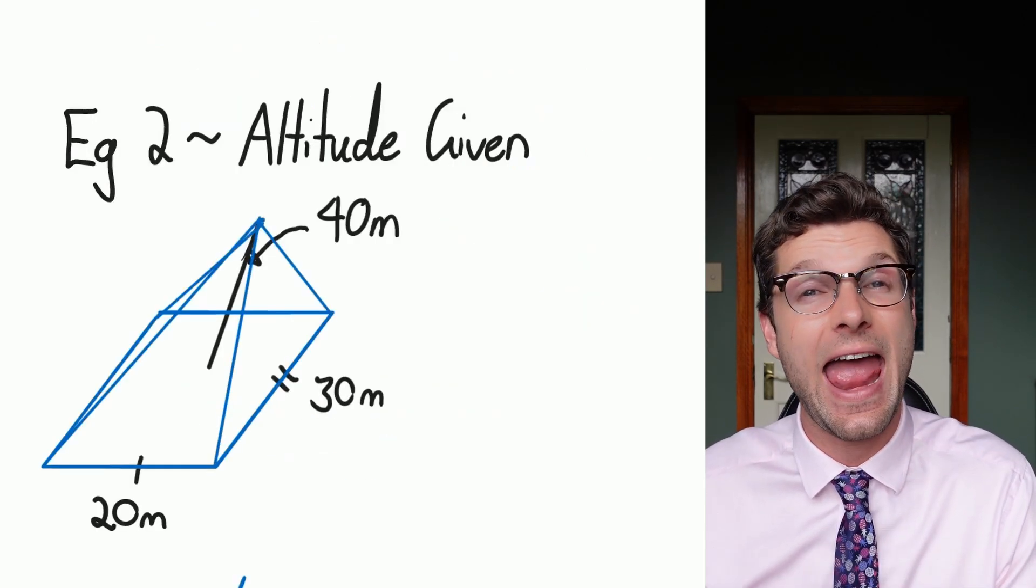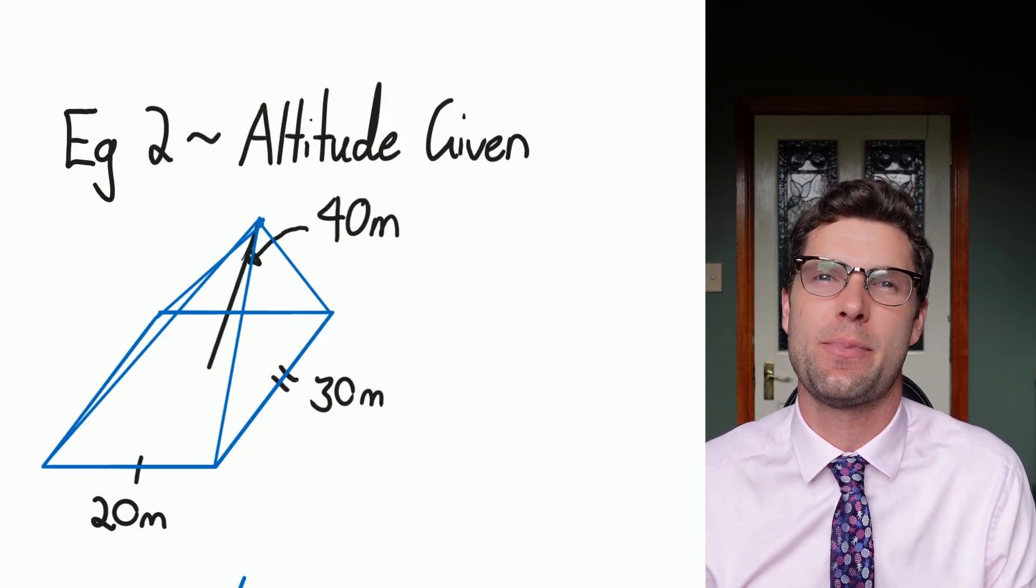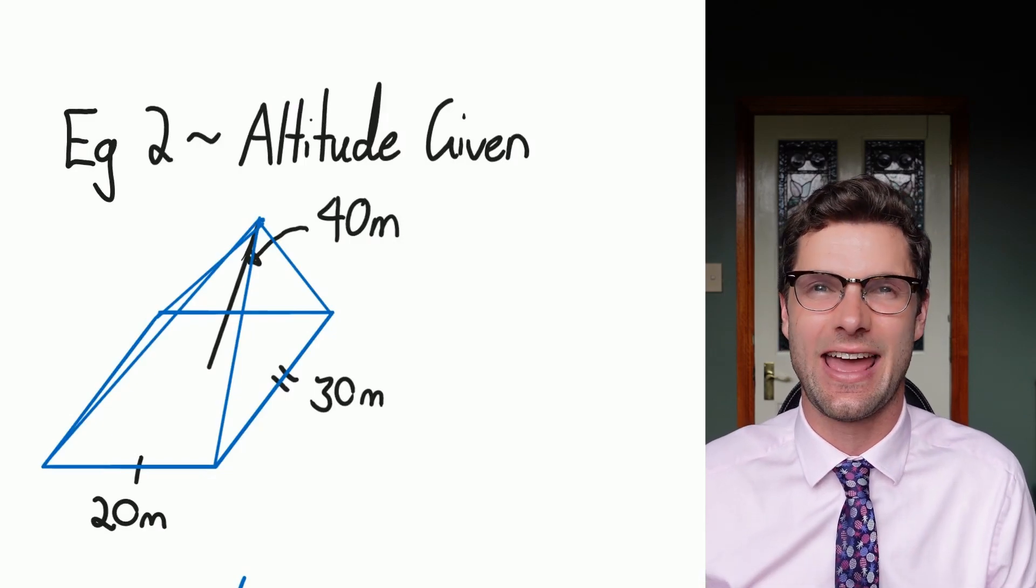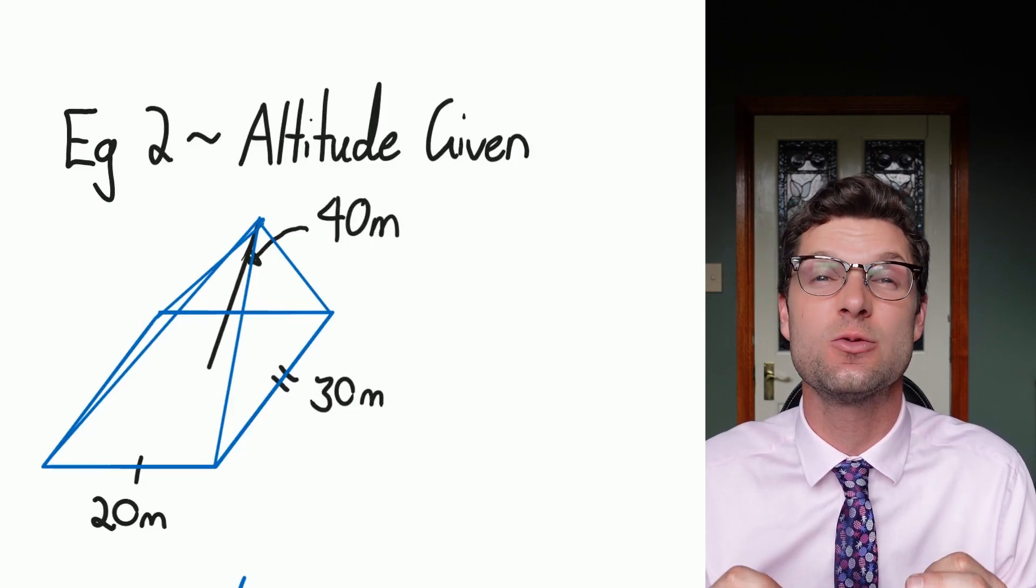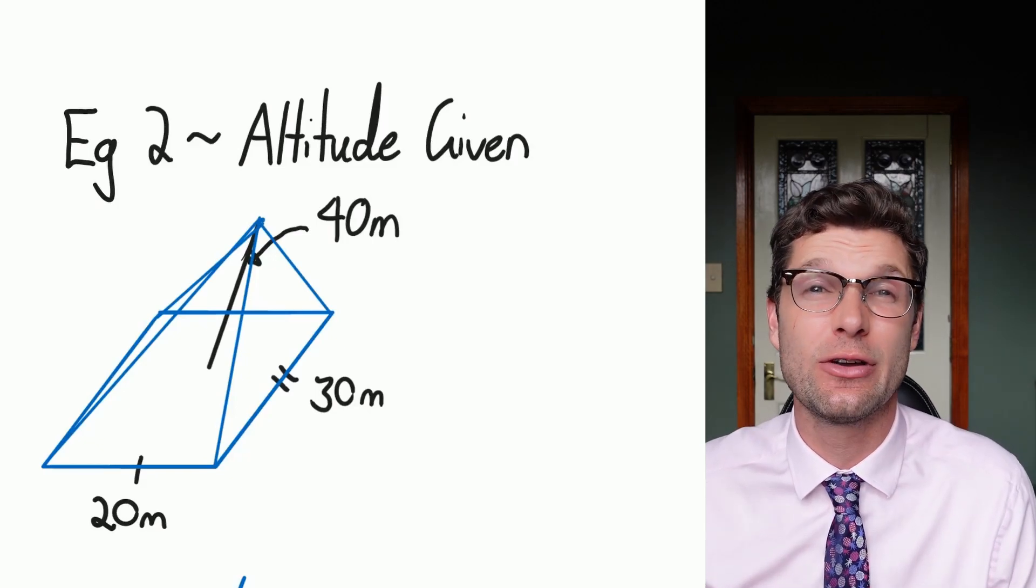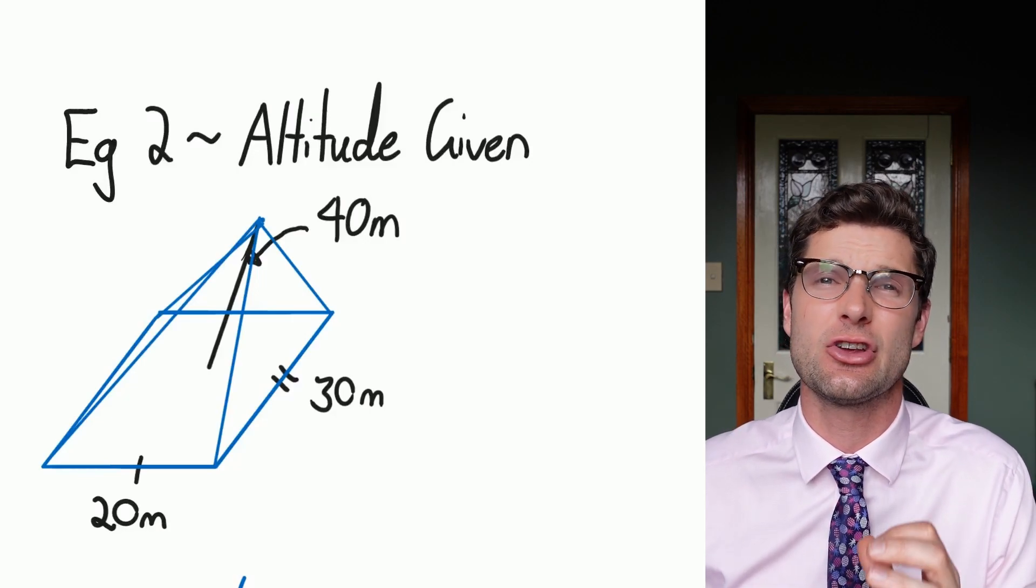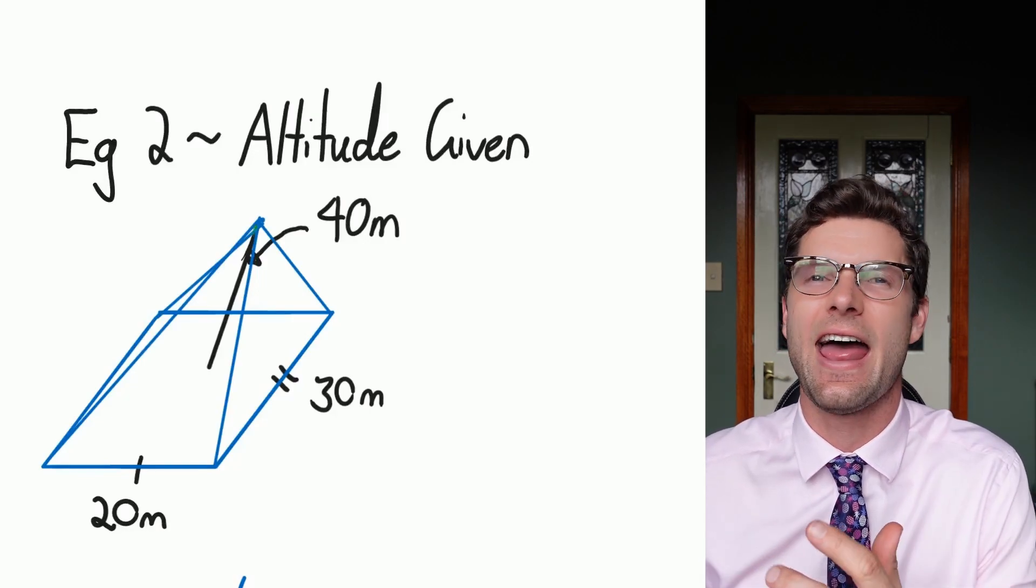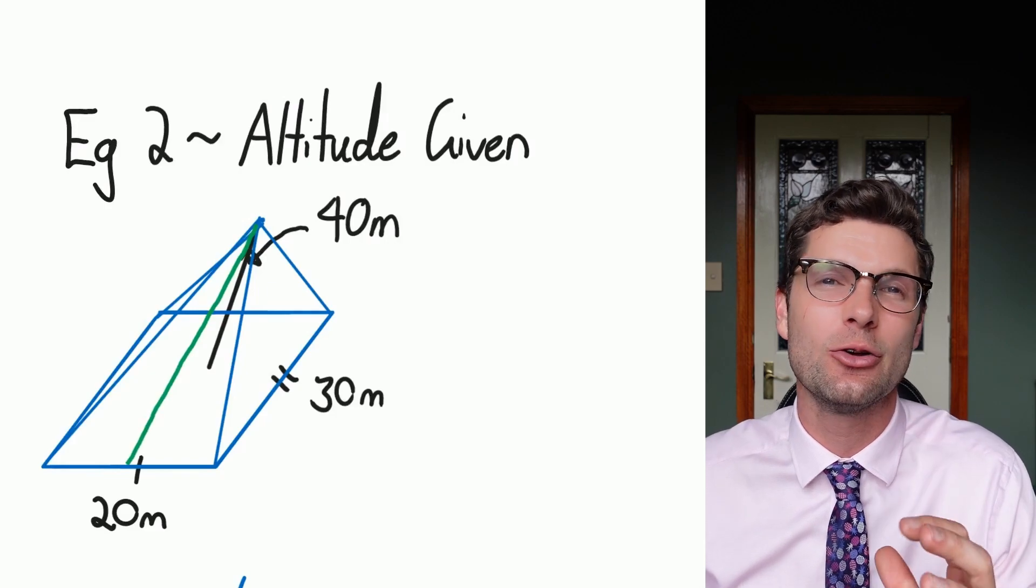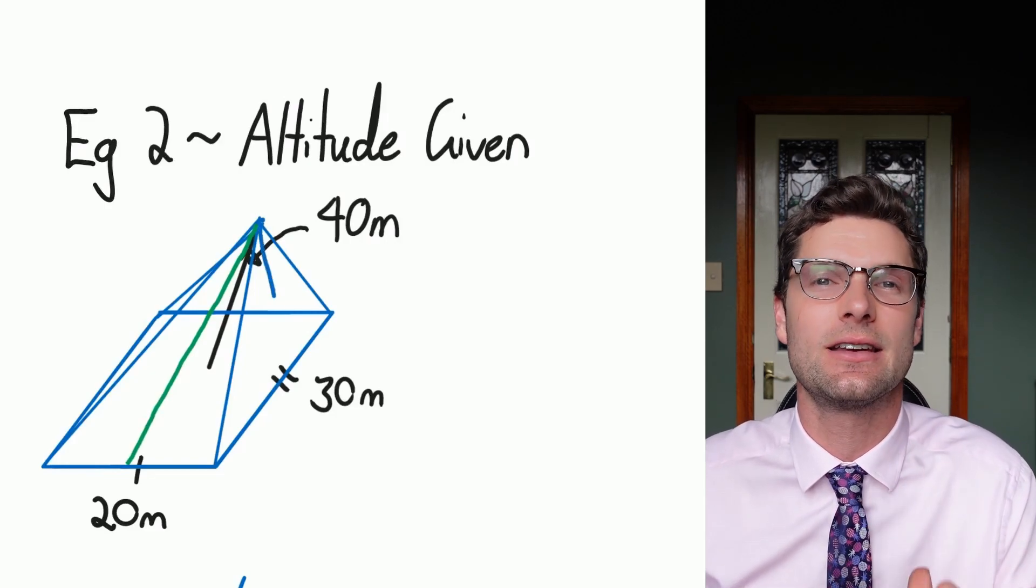So when they get harder is when the altitude or the actual height of the pyramid is given and not the slant length. So you do have to make sure that you are looking for this when these questions pop up. So what we're looking for is the slant height of each side. These are going to be different, so you just can't use that 40 and think yep done. So we're looking for this blue and green line that come down from here.